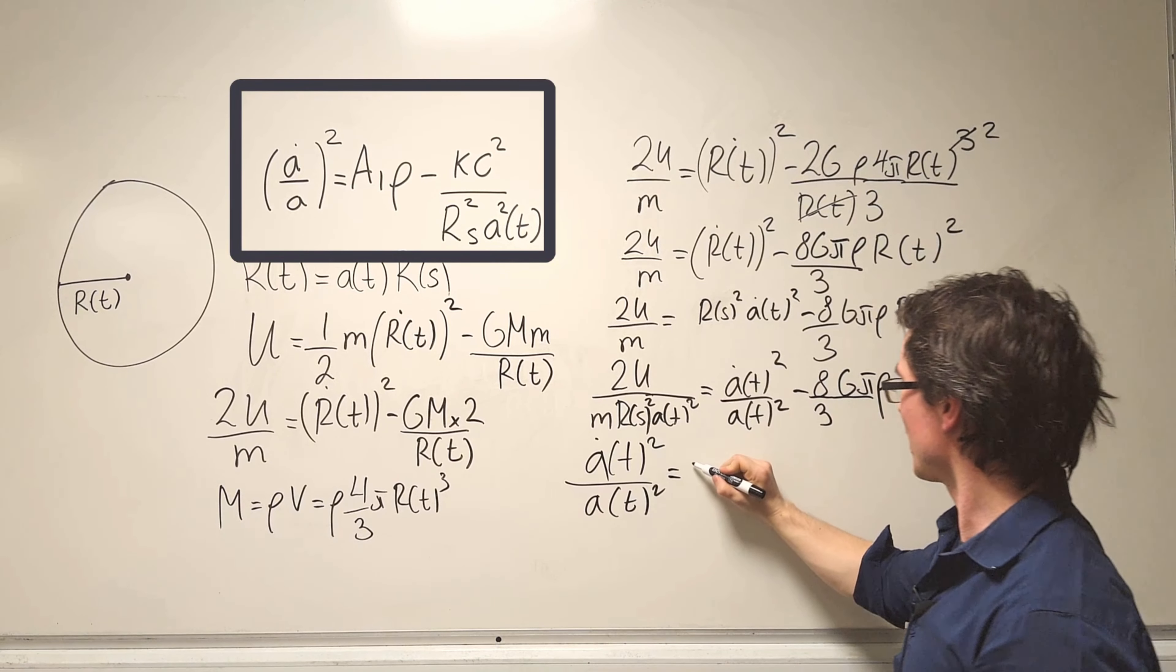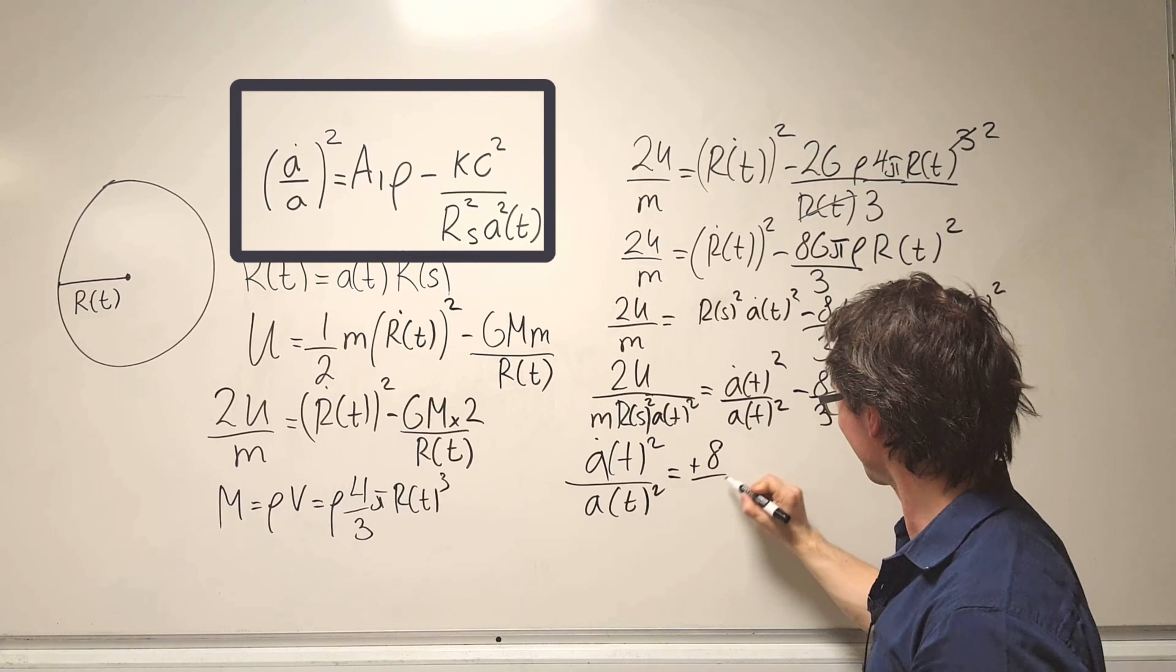Squared over A(t) squared is equal to plus 8 over 3 G pi rho plus 2U over m R(s) squared A(t) squared.